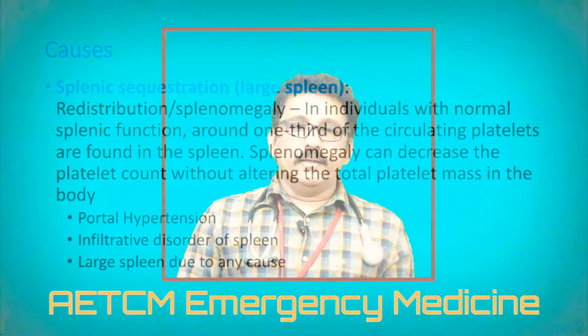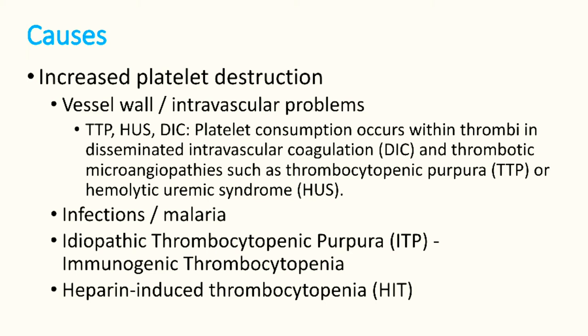The third important cause is increased platelet destruction inside blood vessels, outside the spleen. Conditions like TTP (thrombotic thrombocytopenic purpura), HUS (hemolytic uremic syndrome), and DIC (disseminated intravascular coagulation) cause platelet destruction intravascularly. Infections like sepsis and malaria can also destroy platelets. ITP (immune thrombocytopenia) causes destruction in the blood or spleen, and heparin can cause heparin-induced thrombocytopenia.